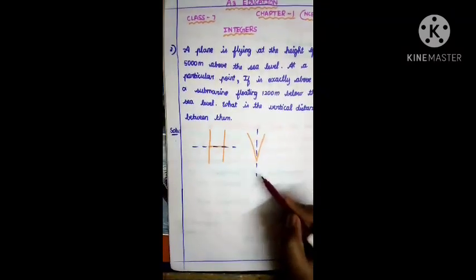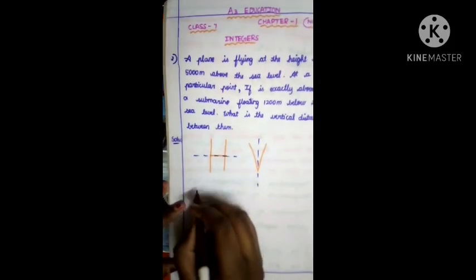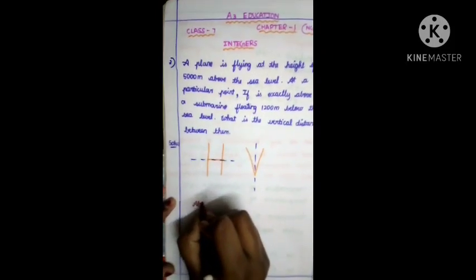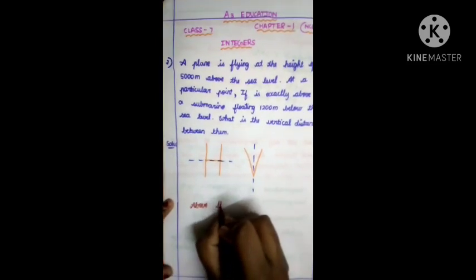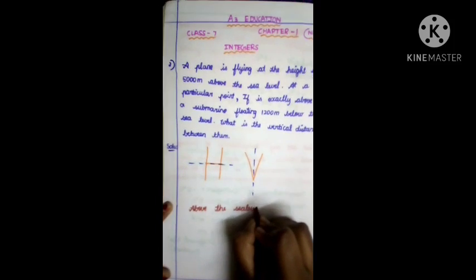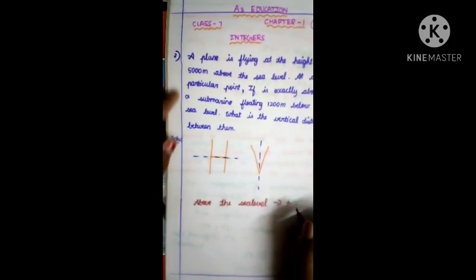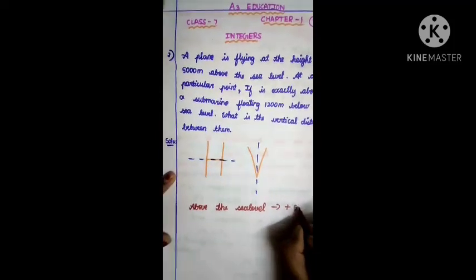So vertical means like this. First, we are going to write above the sea level, which means plus. Above the sea level, it is 5000 meters.